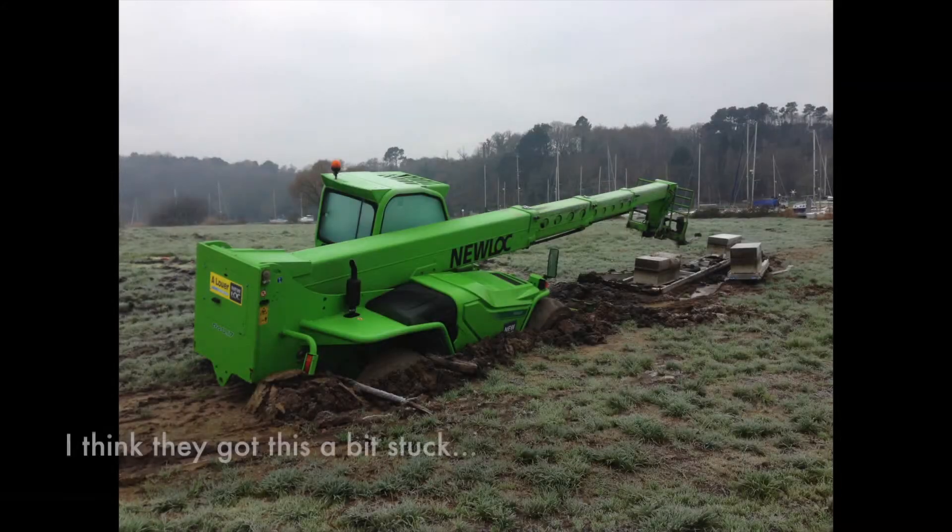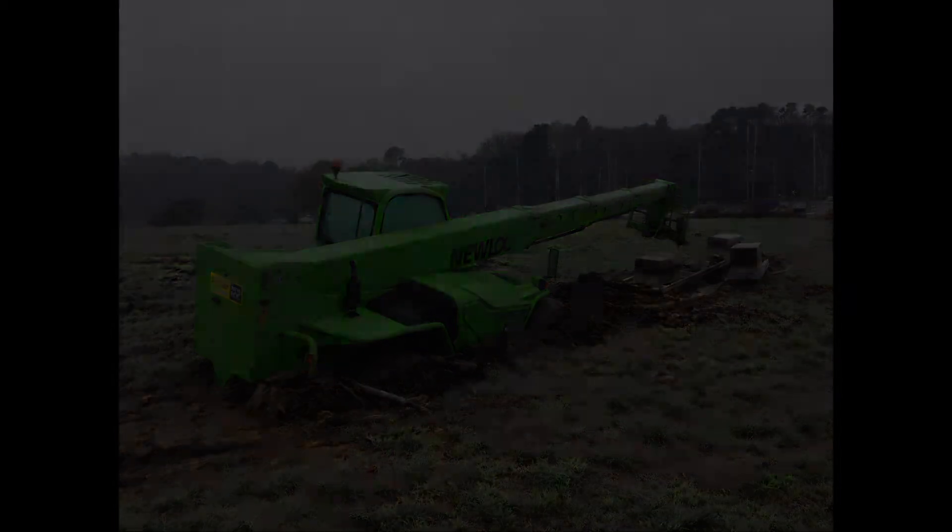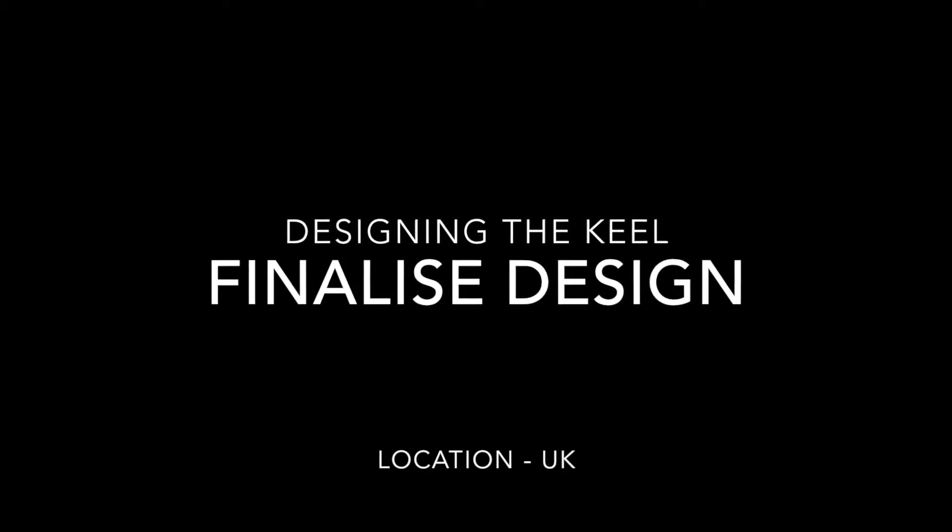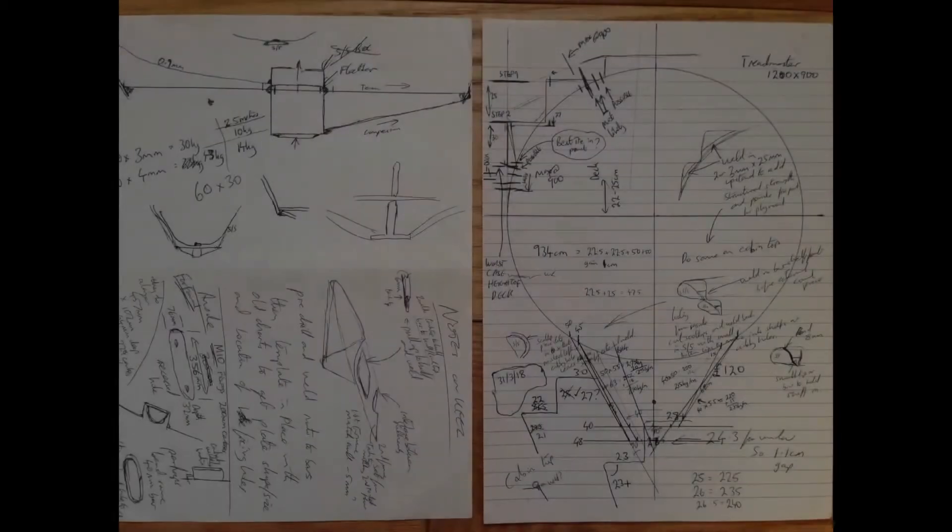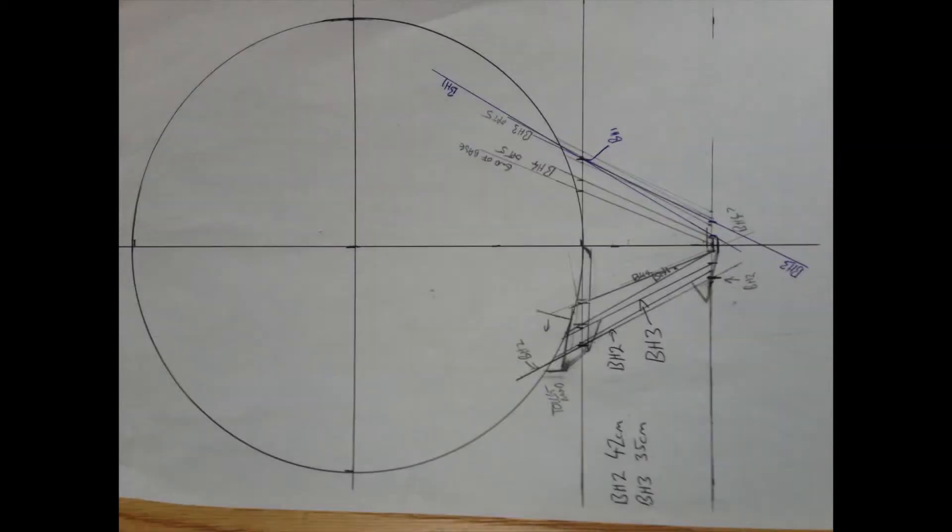So I took all those dimensions and plotted them onto bits of paper to try and get some idea of the twist and shape of the hull. Just before I left I saw this tractor, they had to use a crane apparently to get it out. So with all the measurements gathered from France, I returned to a very cold and wet UK to come up with a design. I had to balance all those requirements that I had against the constraints to come up with a best compromise.